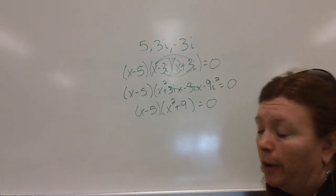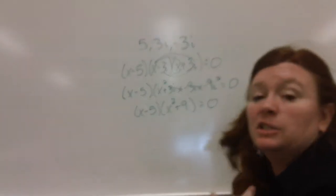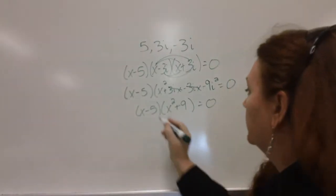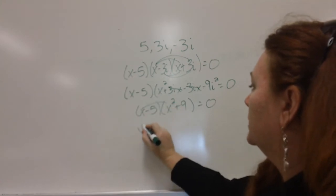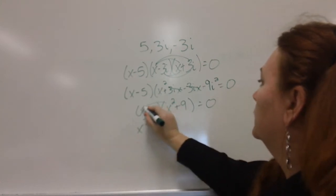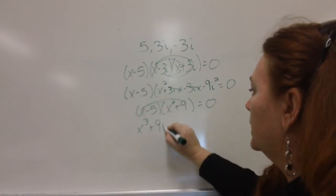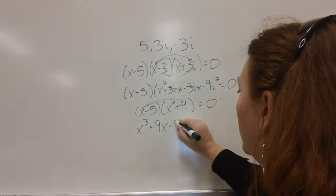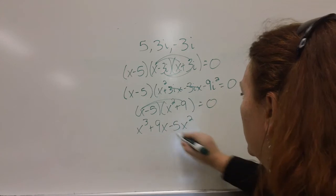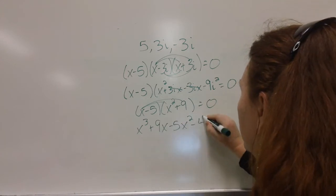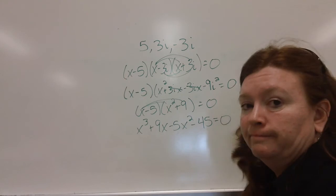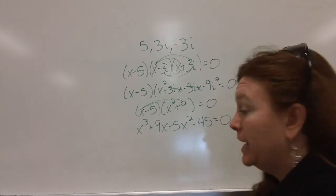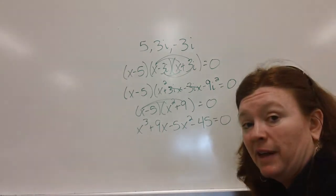Now, am I done? No. But this isn't so bad to multiply. I can do this. FOIL again. First, X to the third plus 9X. That's the outer terms. The inside terms are negative 5X squared. And the last terms give me a negative 45. I don't have any like terms. I can't combine anything. I cannot simplify this.